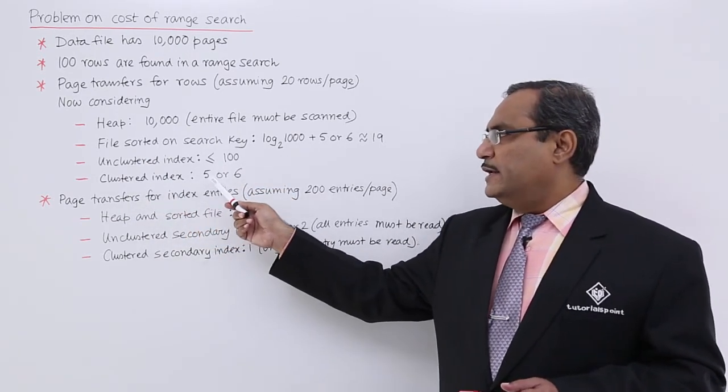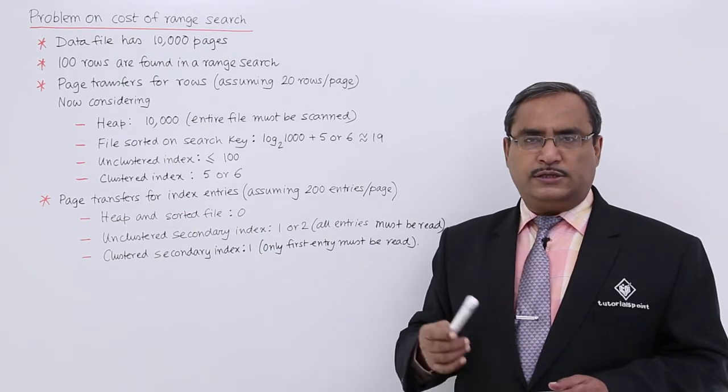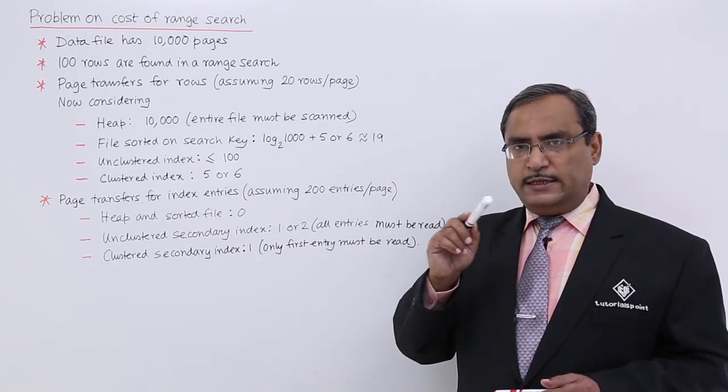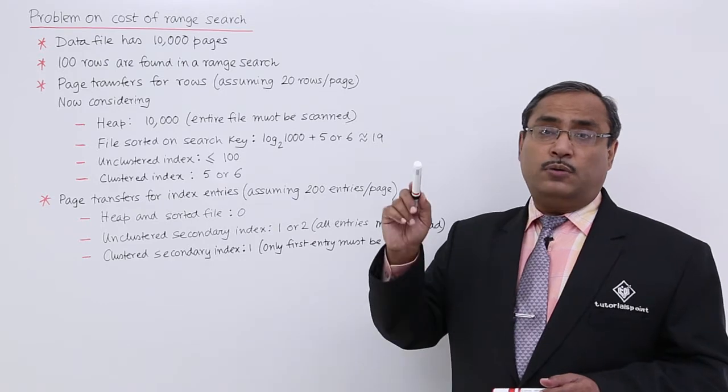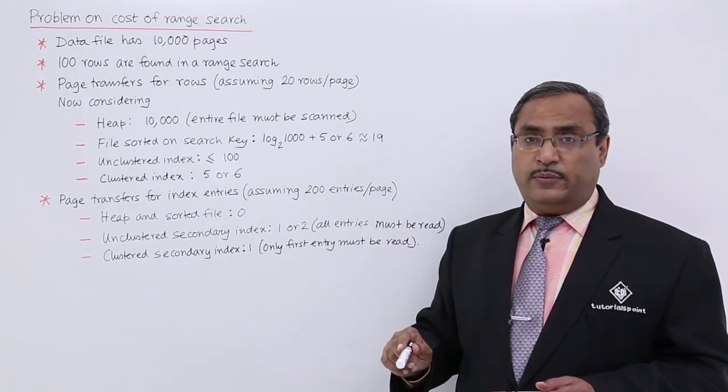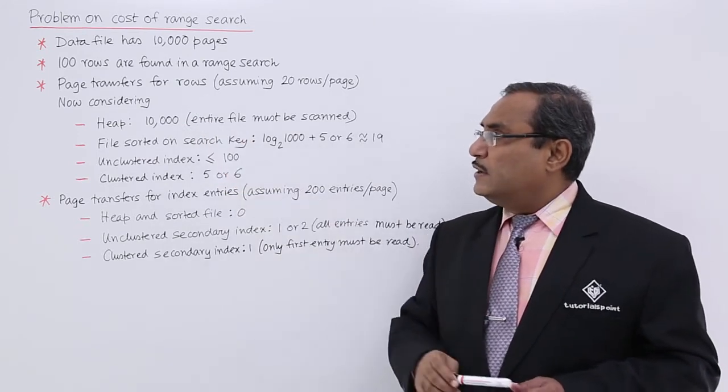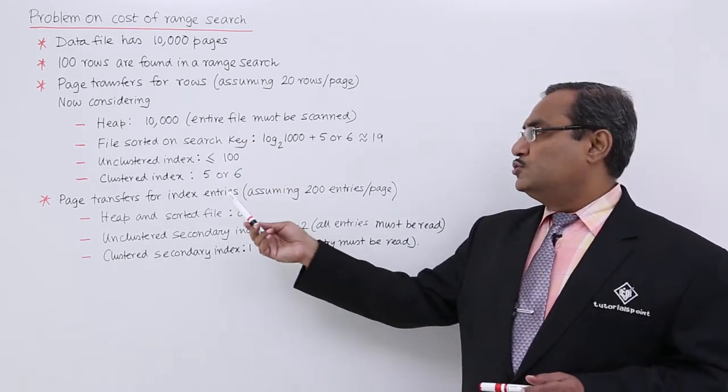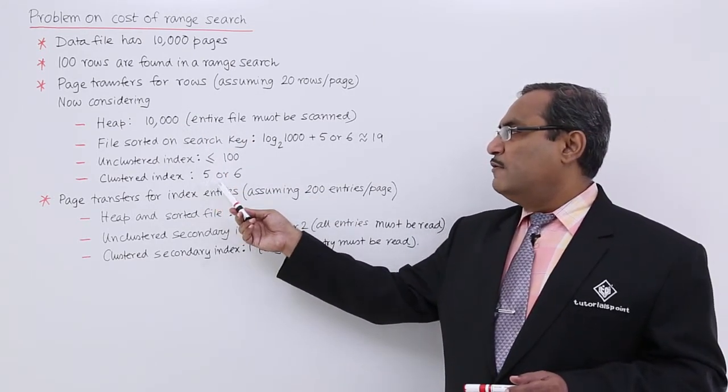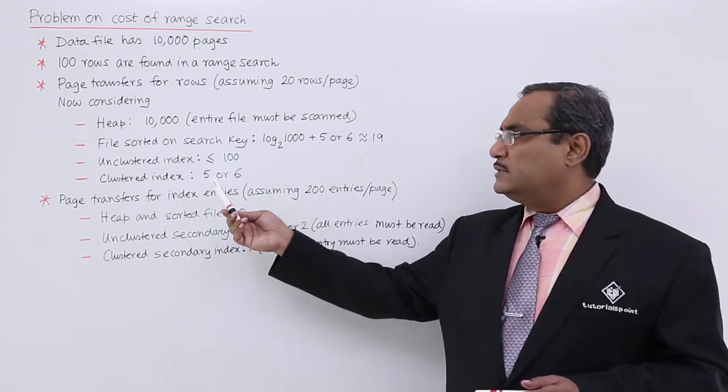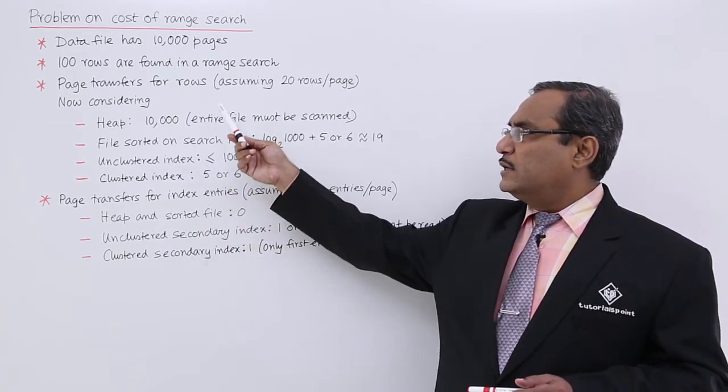In case of clustered index, 5 or 6. We know that in case of clustered index the indexing sequence and the respective record existing sequence in the data file, they will be same. As we are having 100 number of rows, we are going to have 5 or 6 number of searching will be requiring, so that is the cost for this.